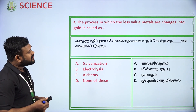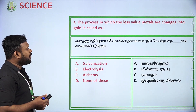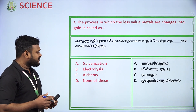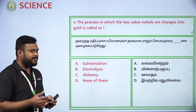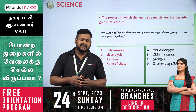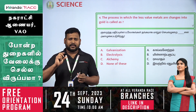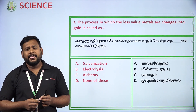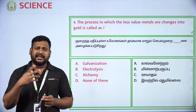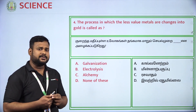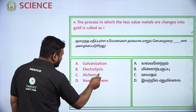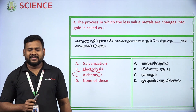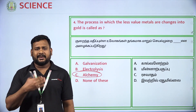The process in which less-valued metals are changed into gold is called what? Options are: Galvanization, Electrolysis, Alchemy (Rasavadha), and Alchemist. The answer is option C — Alchemy, also known as Rasavadha.